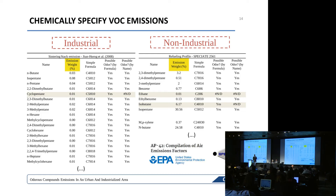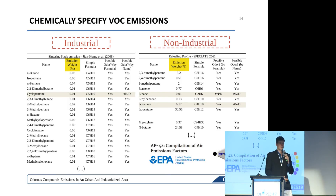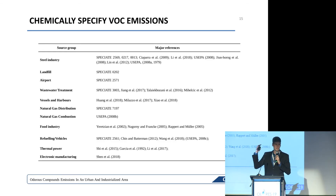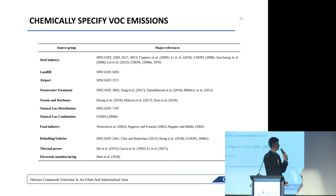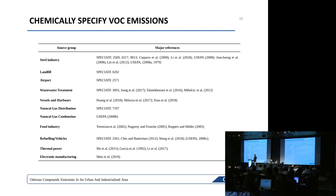We have a list of common VOC and TRS odorant compounds, and a list of sources emitting these compounds in our study region. The next stage is to chemically specify the emissions from these sources. For each industry and non-industrial source, we need the chemical profile of the emission — the names of the compounds, how much of each is being emitted, and whether that compound is a possible odorant by its formula and name — which we cross-reference with the list we made before.